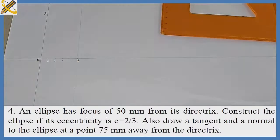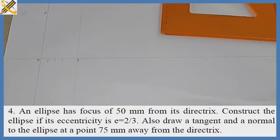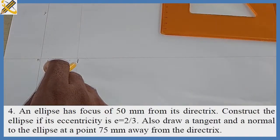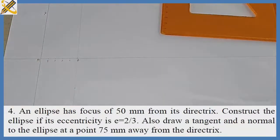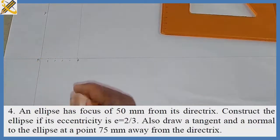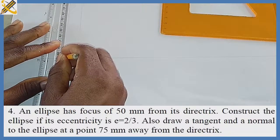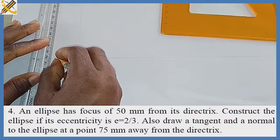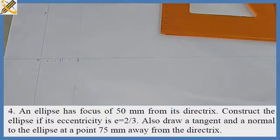The next procedure is to locate our point P, which is the vertex. Based on the given question, our eccentricity — the position of our vertex — is 2/3 of the whole dimension. That implies that from point F I'm going to step over two divisions from point F, and that's going to be my point P. So on this point at division two, this is my point P.